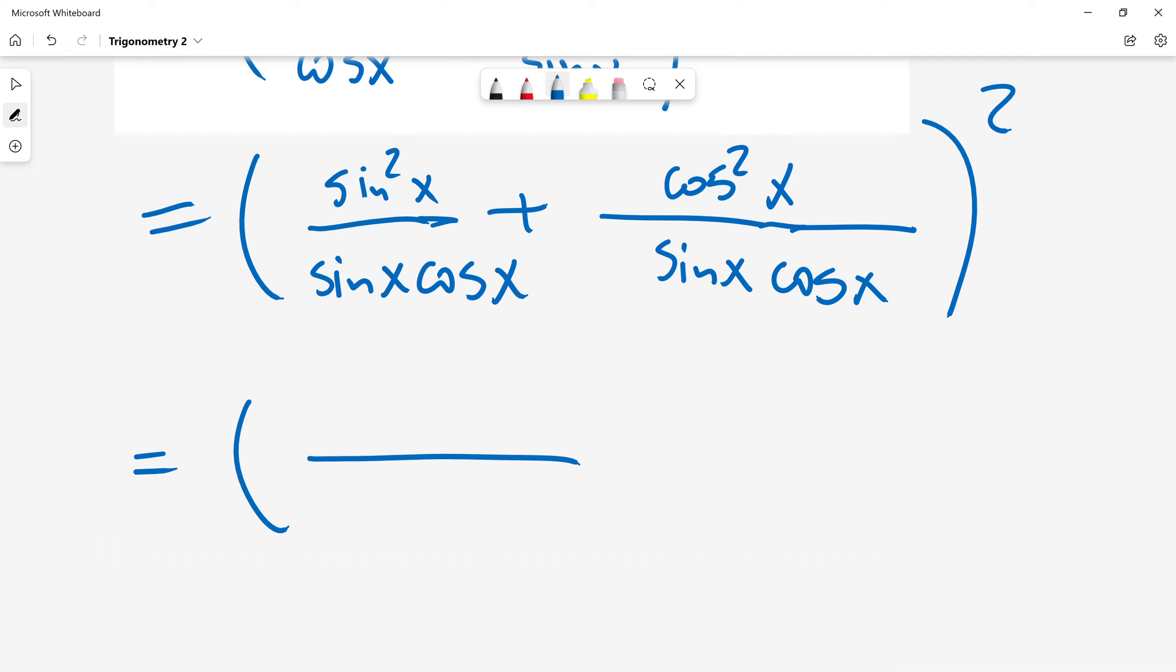Then I'm adding two fractions. The denominator is the same. So I need to add numerators: sin squared x plus cos squared x squared.